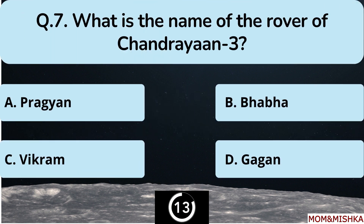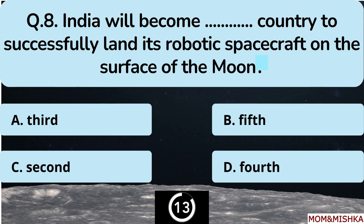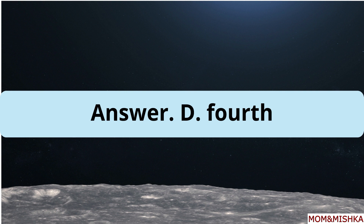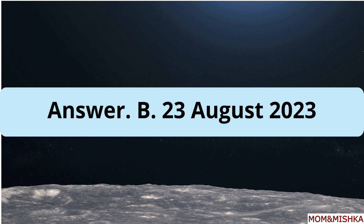What is the name of the rover of Chandrayaan-3? India will become which country to successfully land its robotic spacecraft on the surface of the moon? The lander and rover are expected to land near the lunar south pole region on option B: 23 August 2023.